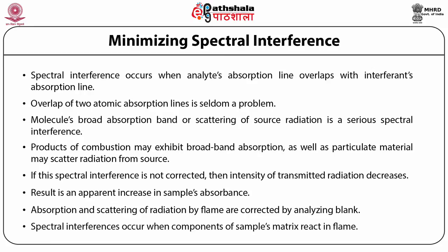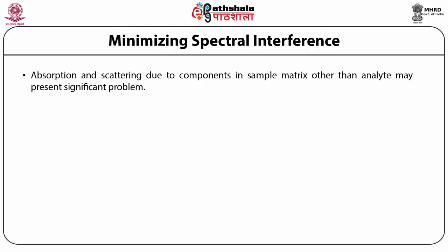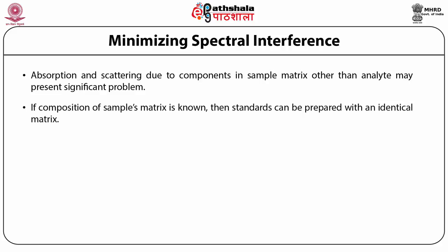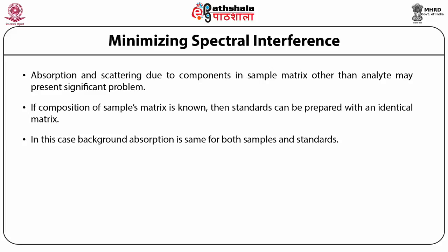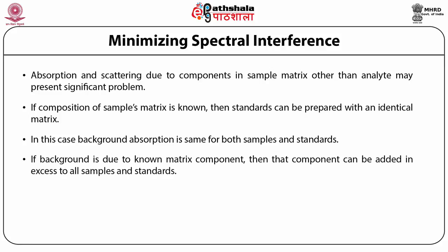Spectral interferences also occur when components of the sample's matrix react in the flame to form molecular species such as oxides and hydroxides. Absorption and scattering due to matrix components other than the analyte constitute the sample's background, which may present a significant problem particularly at wavelengths below 300 nm. If the composition of the sample's matrix is known, standards can be prepared with an identical matrix so that the background absorption is the same for both samples and standards. Alternatively, if the background is due to a known matrix component, that component can be added in excess to all samples and standards so that the naturally occurring interference becomes insignificant.